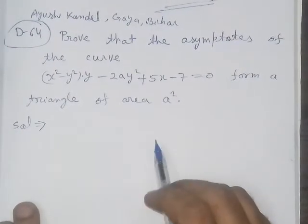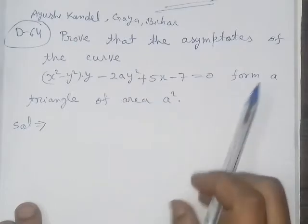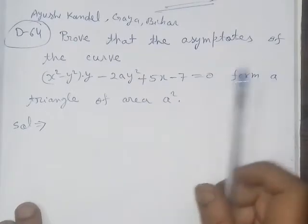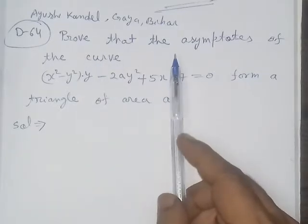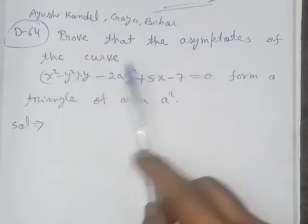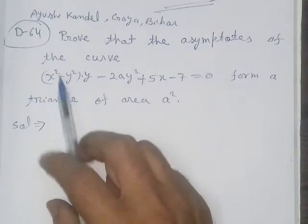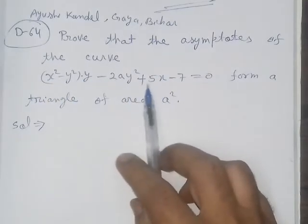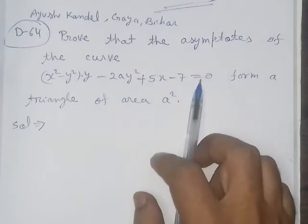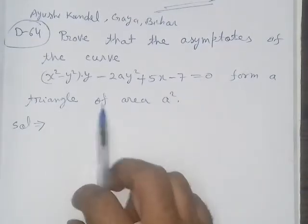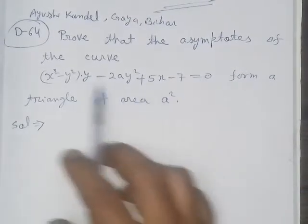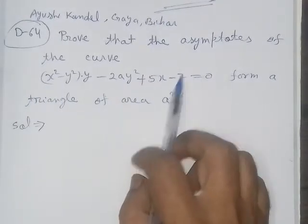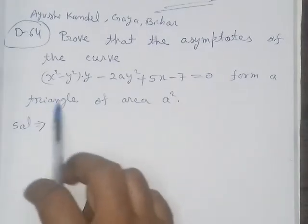Bismillahirrahmanirrahim. On the demand of Ayushi Candel from Gaya, Bihar, the problem is from differential calculus on asymptotes. We have to prove that the asymptotes of the curve x² minus y² multiplied by y minus 2ay² plus 5x minus 7 equals 0 form a triangle of area A².